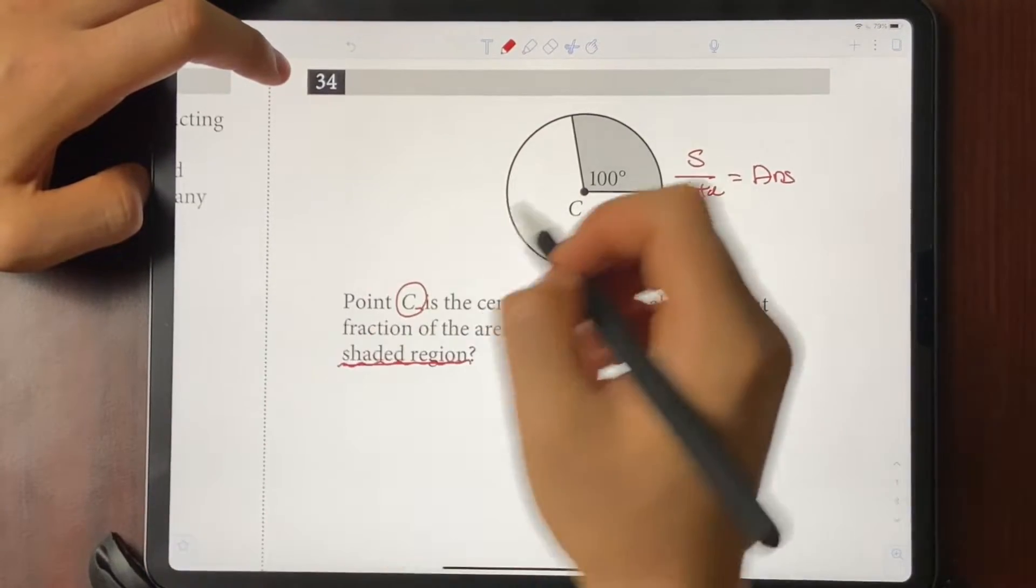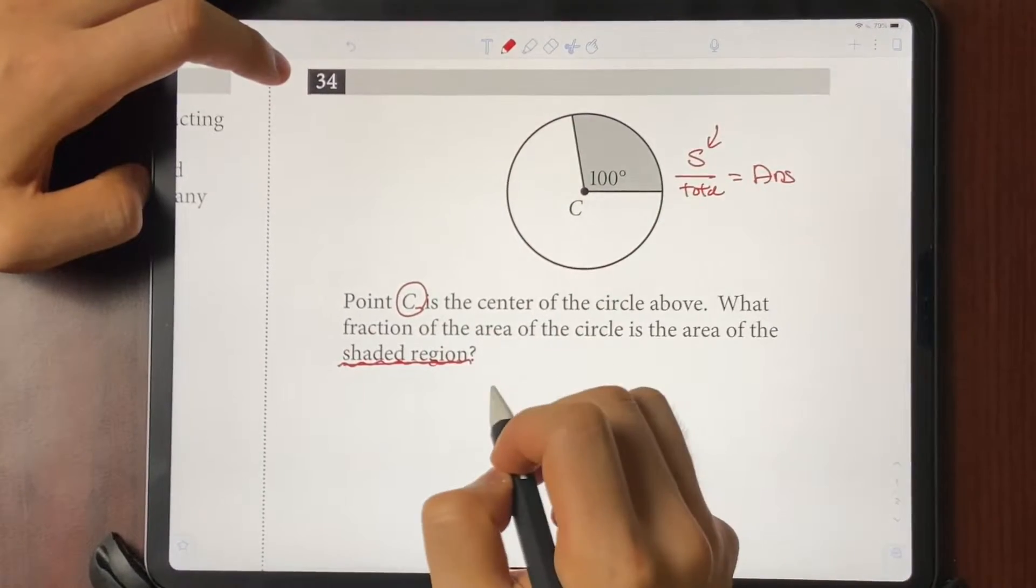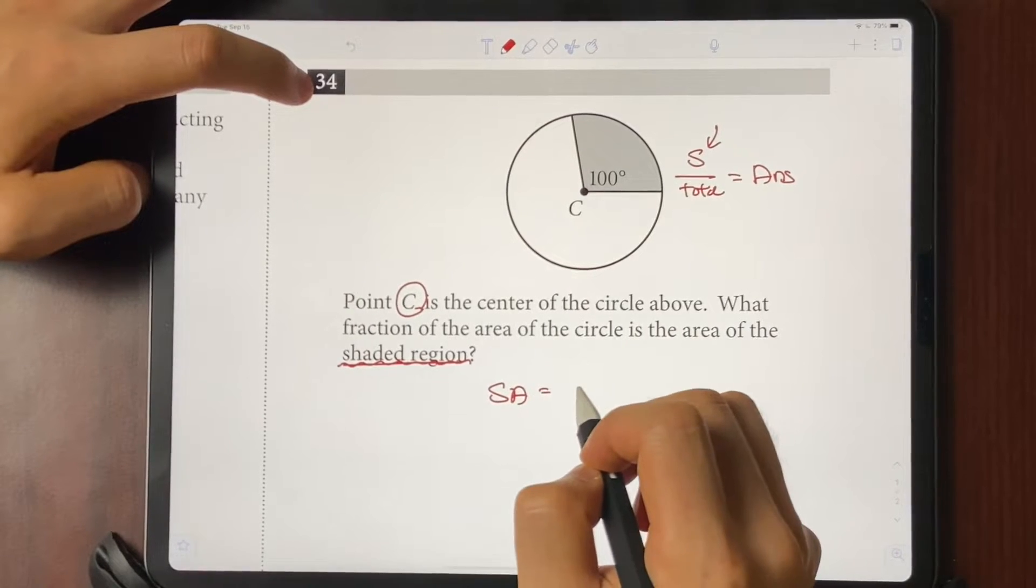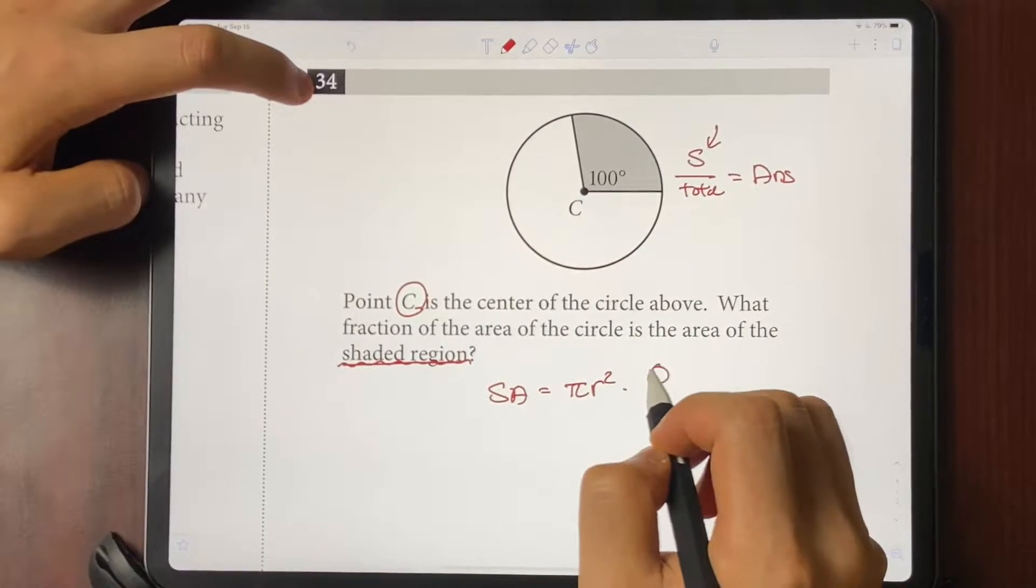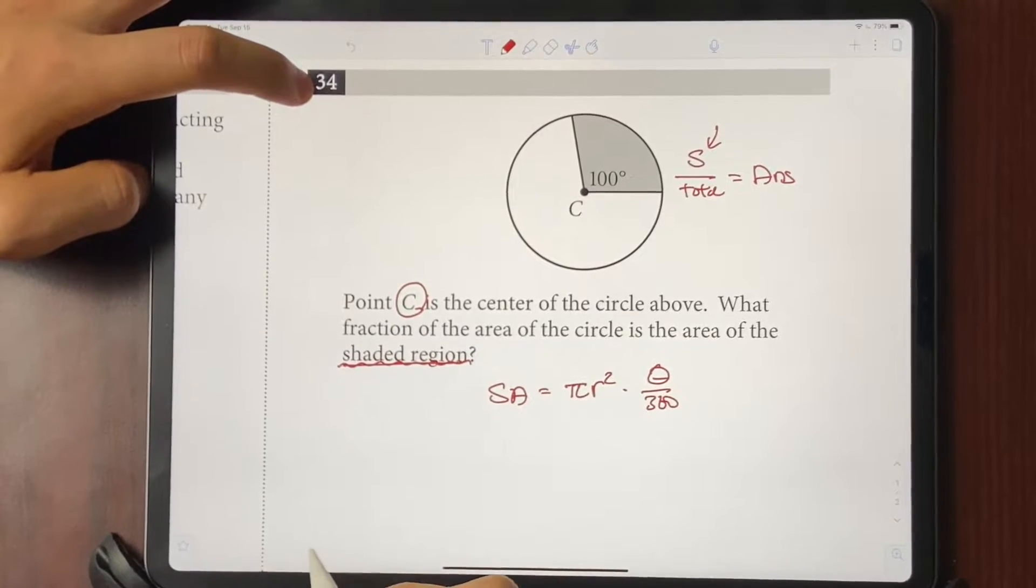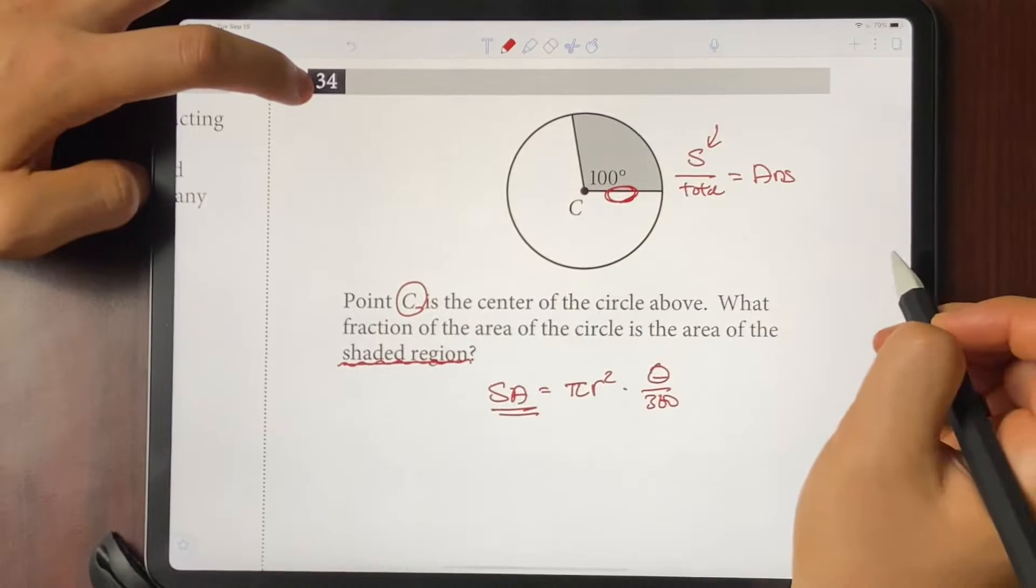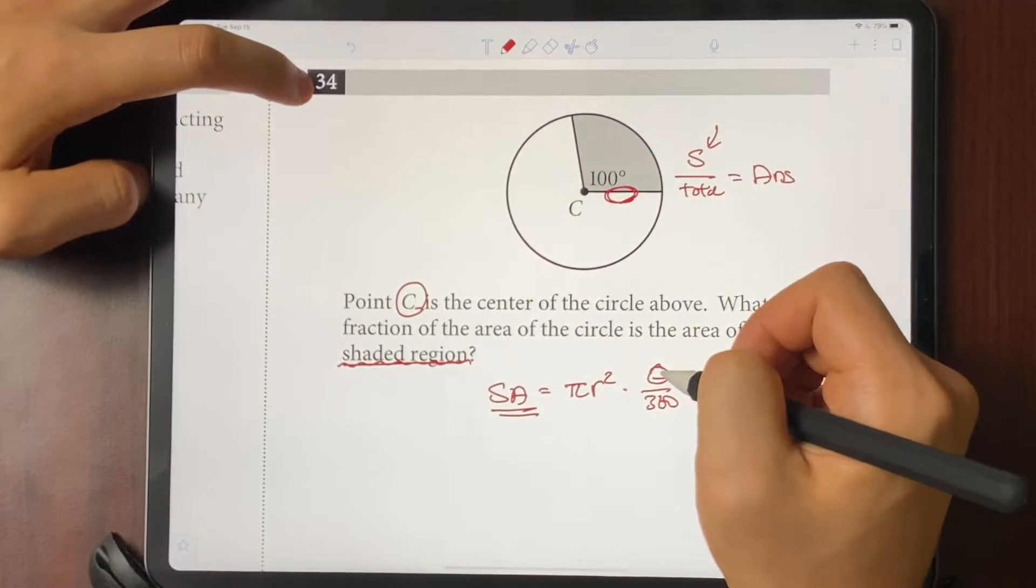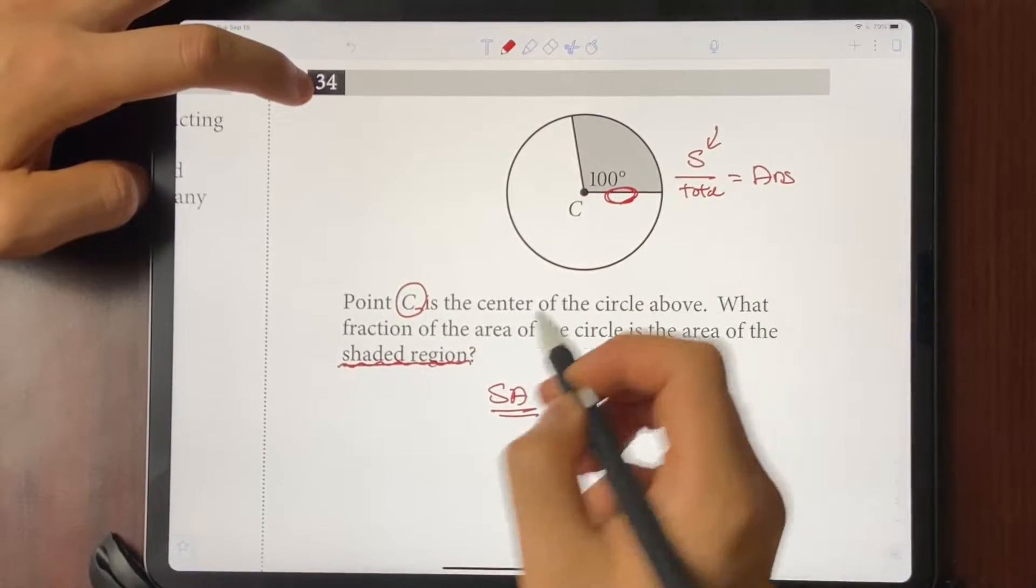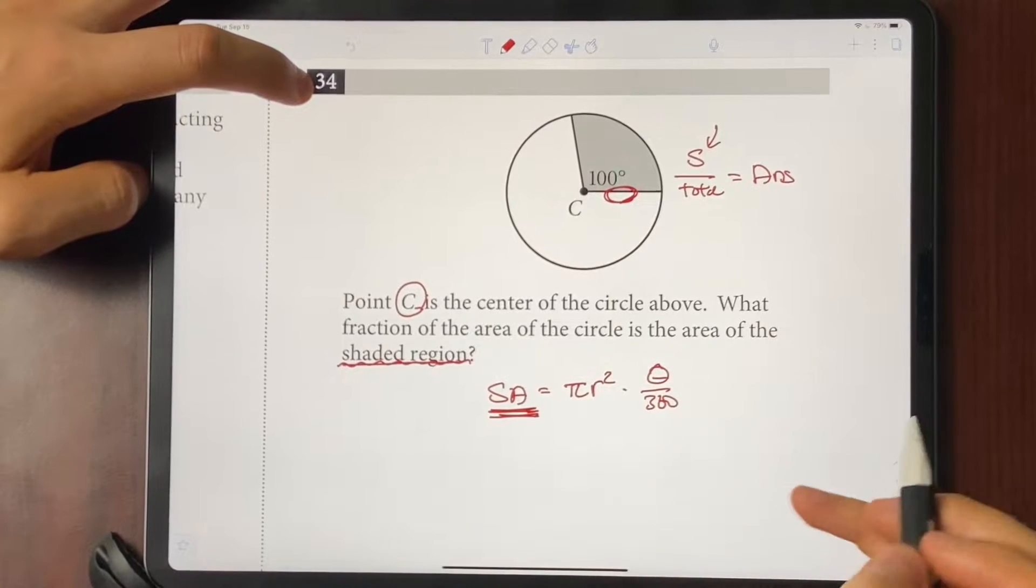So what normally people would do is find the area of the shaded using the sector area formula, which can be calculated by pi r squared times theta over 360. But here's one problem. We can't find the area of the sector because we are missing the radius. Like you know the angle, you can put it in there, but we don't know what the radius is. So you won't be able to find out what the area of the sector is.